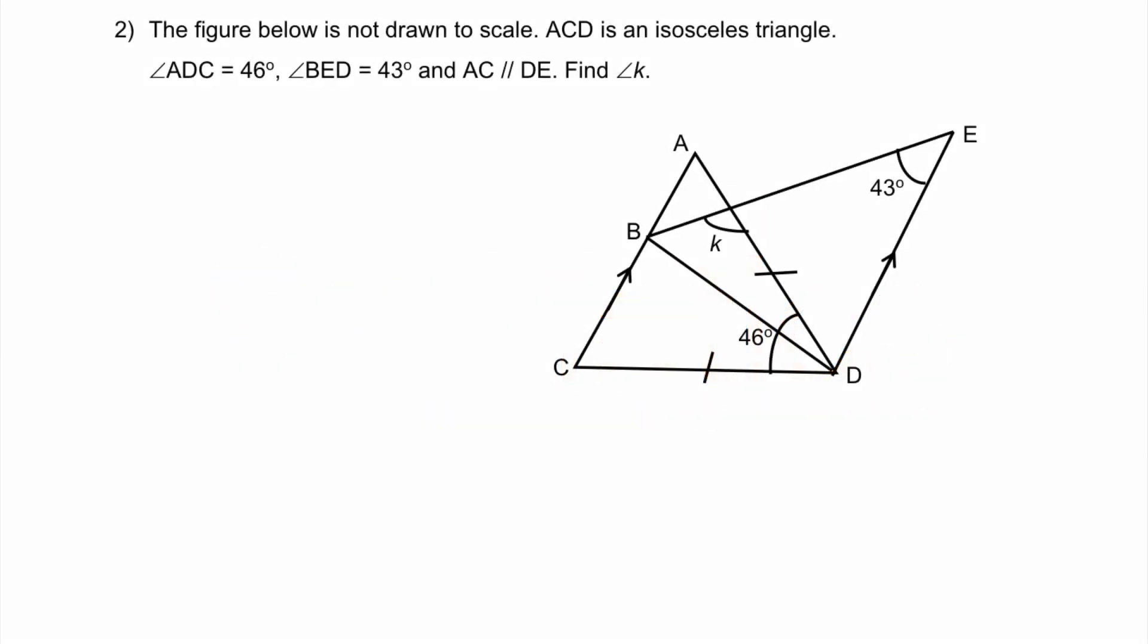The figure below is not drawn to scale. ACD is an isosceles triangle, angle ADC is 46 degrees and angle BED is 43 degrees. The line AC is parallel to the line DE. Find angle K.